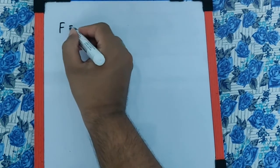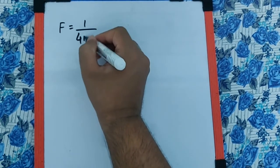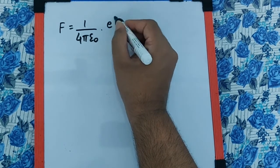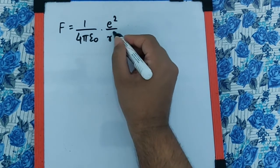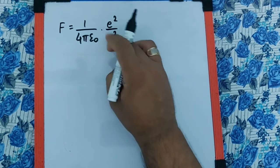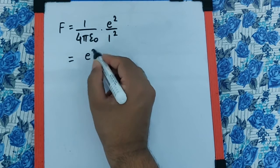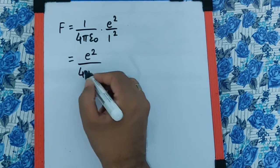Now the force which is given we can write it as 1 upon 4πε₀ times e² by R², where R is 1. So we can substitute that as 1 and so your formula remains as e² upon 4πε₀.